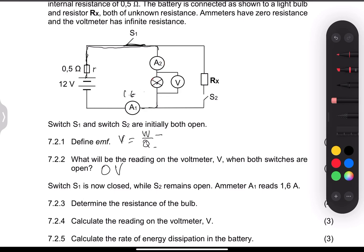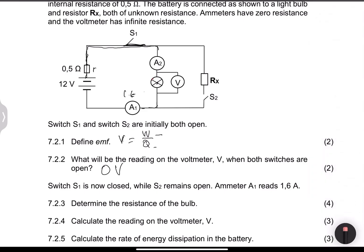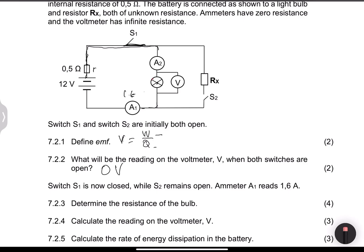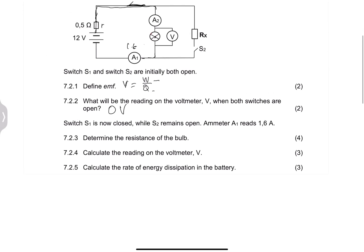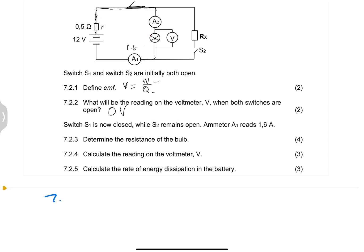Now they say: determine the resistance of the bulb. We know the current passing through, and the bulb is the only external resistor. So I'm going to use my EMF equation. EMF equals I times (R plus r), where the internal resistance is known. EMF is 12 volts, the total current is 1.6 amps, and the internal resistance is 0.5 ohms.